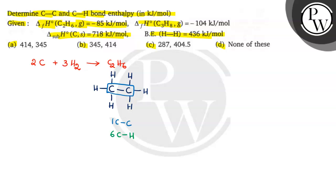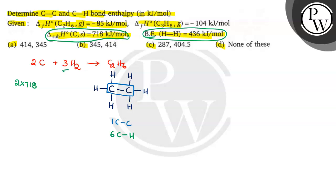The delta H sublimation of carbon is given per 1 mole. In the balanced equation, how many carbons are there? There are 2 moles of carbon. So you need to take 2 into 718 for sublimation. The hydrogen bond energy is 436 kilojoules per mole, and there are 3 moles of hydrogen. Delta H formation of ethane is also given, and we need to find out CC and CH bond energy.